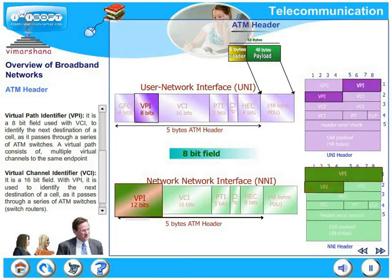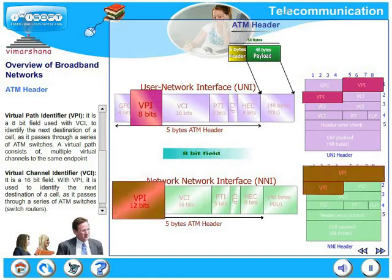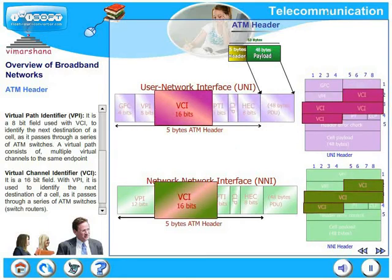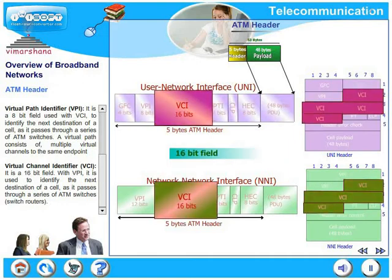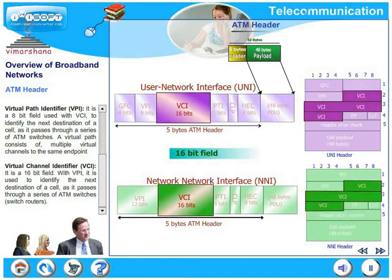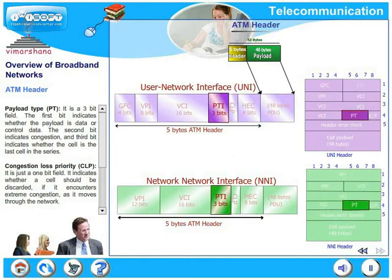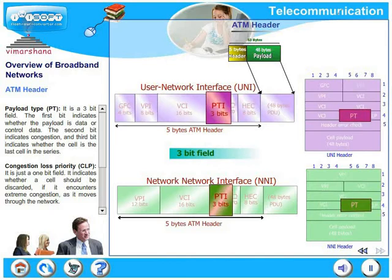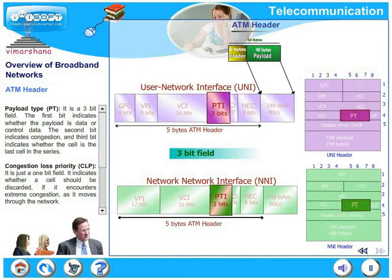A virtual path consists of multiple virtual channels to the same endpoint. The third field is Virtual Channel Identifier (VCI) — a 16-bit field. Together with VPI, it is used to identify the next destination of a cell as it passes through a series of ATM switches or switch routers. Fourth, Payload Type (PT) — this is a 3-bit field. The first bit indicates whether the payload is data or control data, the second bit indicates congestion, and the third bit indicates whether the cell is the last cell in the series.